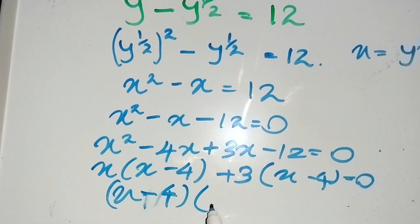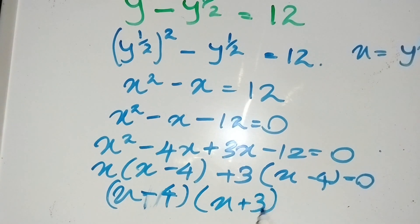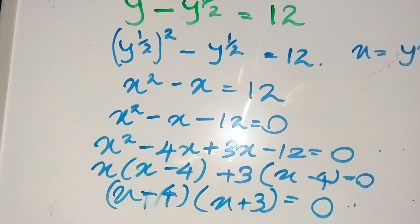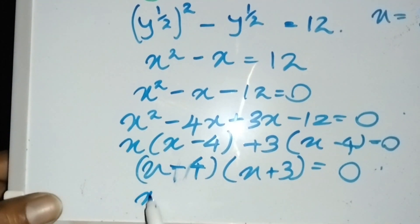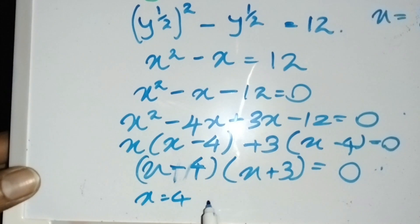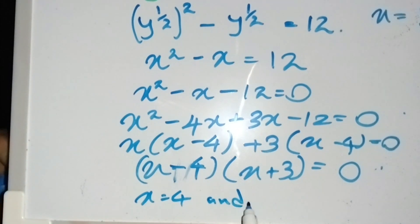Then I can rearrange this expression as (x - 4)(x + 3) = 0, which means x = 4 and x = -3.